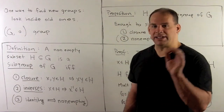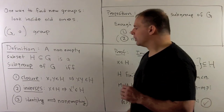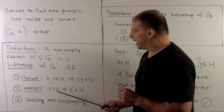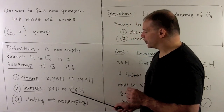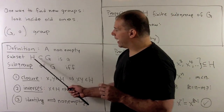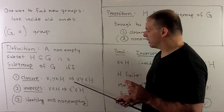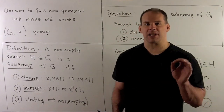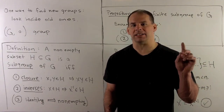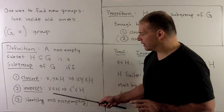Third would be the identity element, but we can get that for free from the last property: closure under inverses. So if X is in H, then X inverse is also in H. Note: H is non-empty, so there's some X in H, which means X inverse is in H. Then X times X inverse is the identity element. Since we're closed under multiplication, the identity element is automatically in the group once we have these two properties.